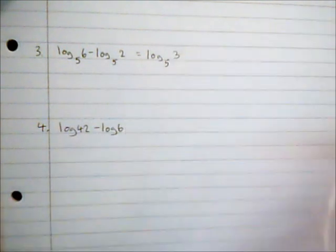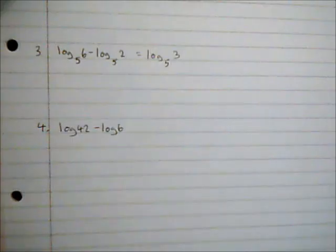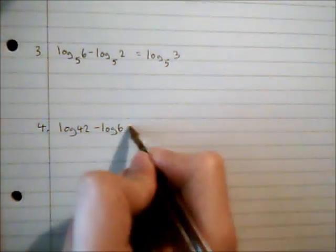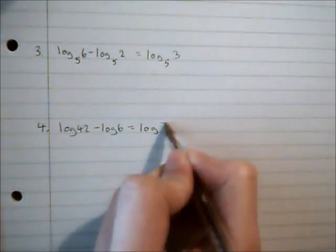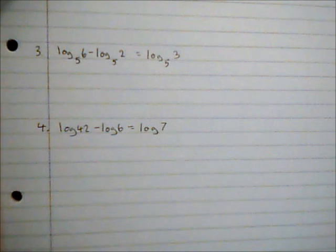Now this final one, we don't have the base of the log given, but in general when we're using log to the base ten, which is usually one of those common ones that we use, we don't bother writing the ten down. So if you just see log it is in fact log to the base ten. So these are both logs to the base ten, so log of 42 divided by 6 is seven, so that is equivalent to log seven.